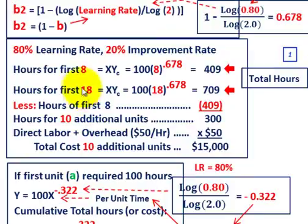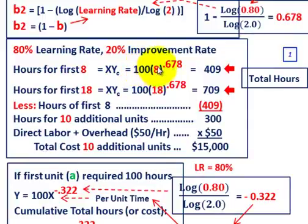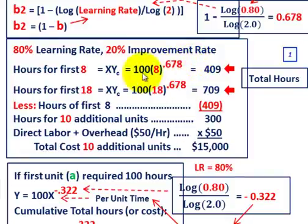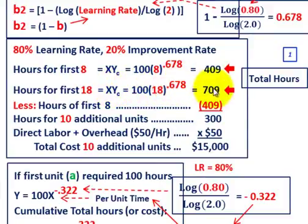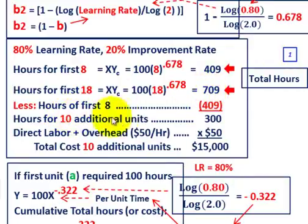For our 80% learning rate and 20% improvement rate: hours for the first 8 units equals 100 times 8 raised to 0.678, giving us 409 hours. For 18 units, 100 times 18 raised to 0.678 gives us 709 hours. Subtracting the first 8 units at 409 hours from the total of 709 hours for 18 units gives us 300 extra hours for the 10 additional units.